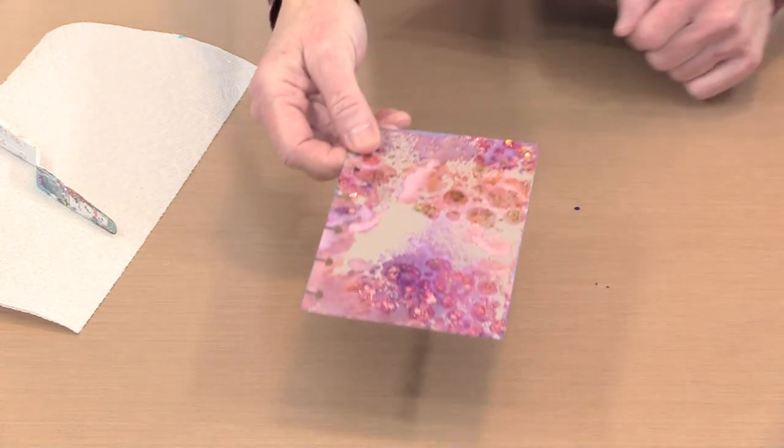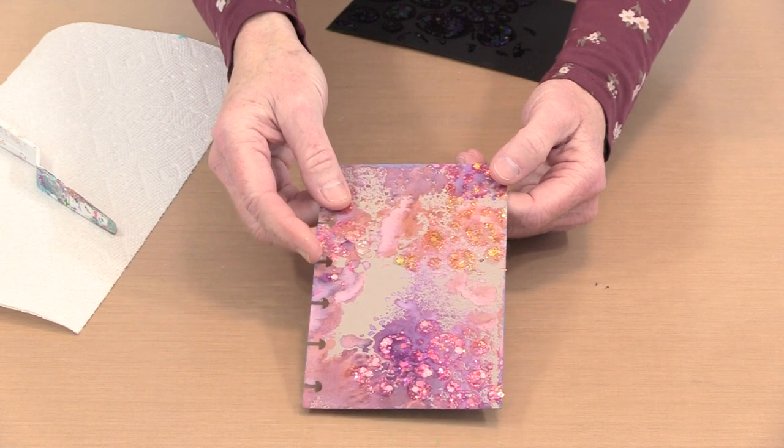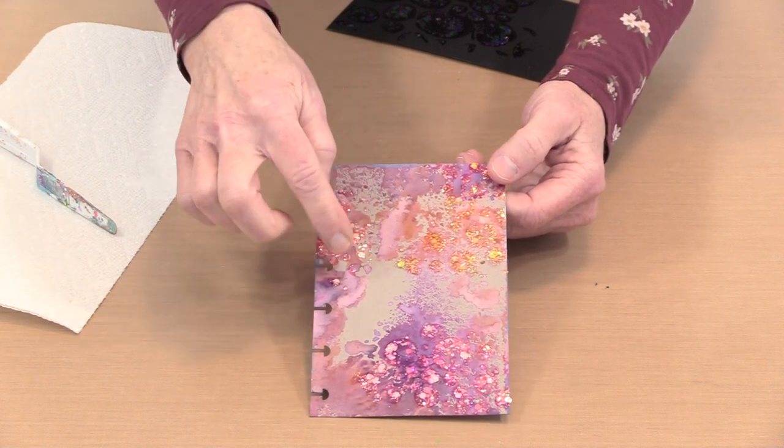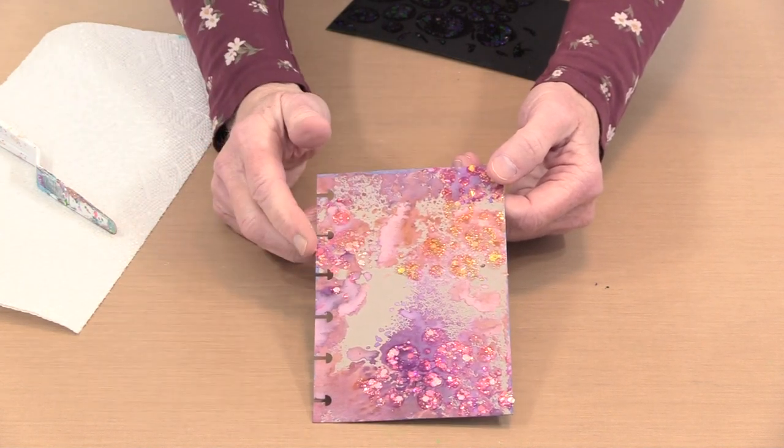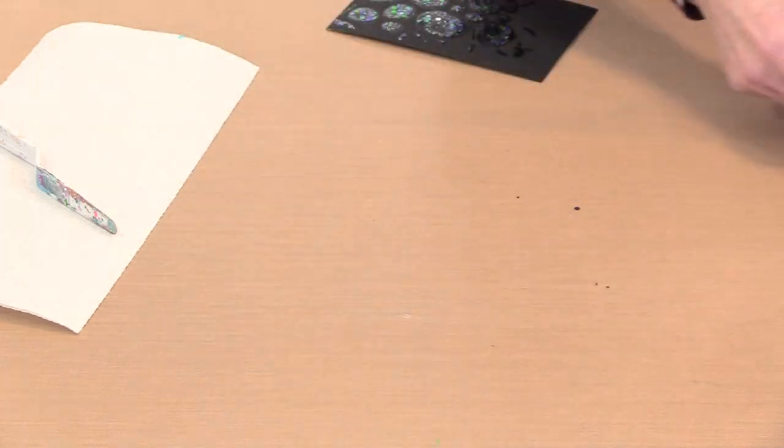So when we talk about stencils, here's a piece that I did. And it's a little hard to see because this is kind of a busy background. But when you see it, you realize that these are circles. Well, they're circles because I used our Bubble Blast stencil and you get this patterning, which is so cool.